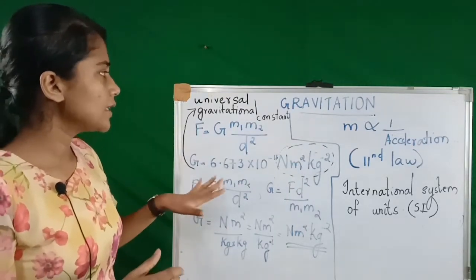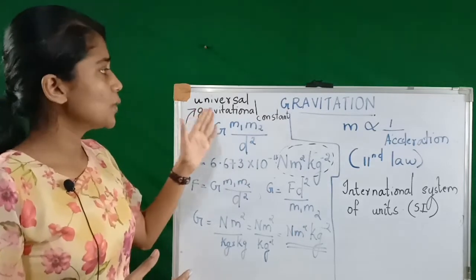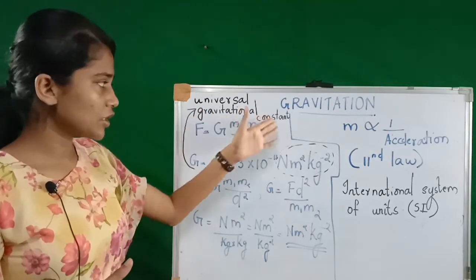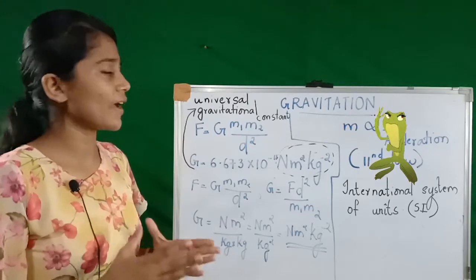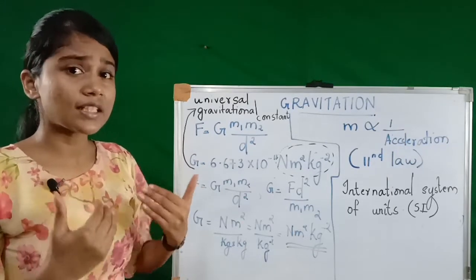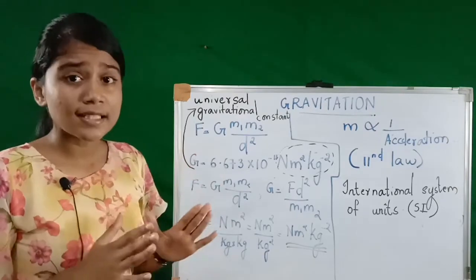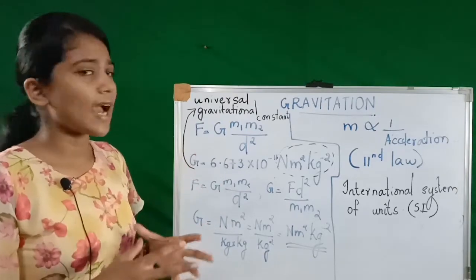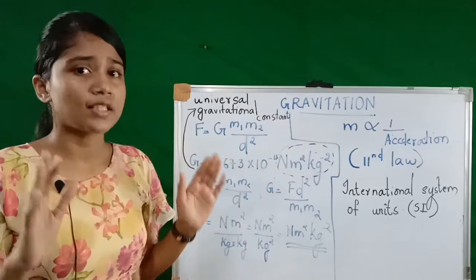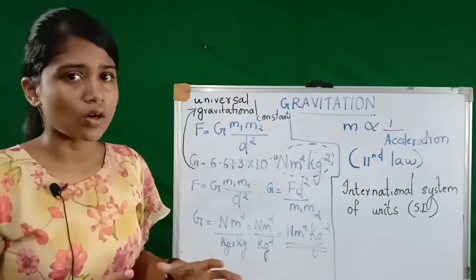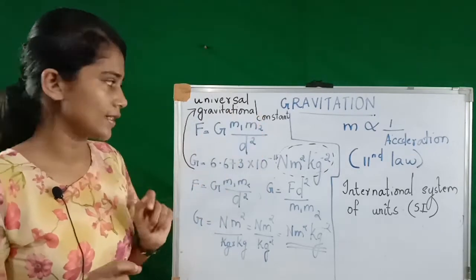Now we learn why it is called the universal gravitational constant. Can't it be just a gravitational constant? This is because if you try to calculate the force of any two objects in the universe, G is a constant. That is why it is called the universal gravitational constant.